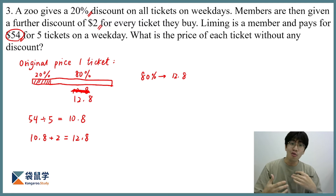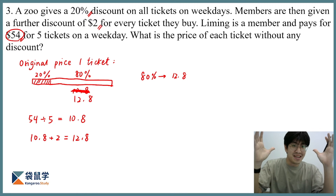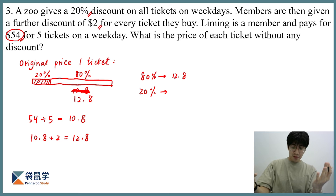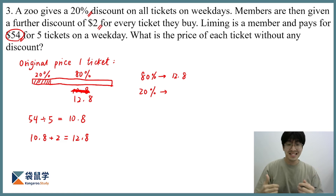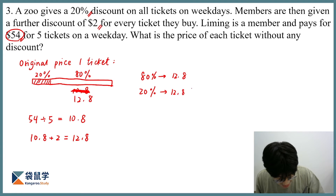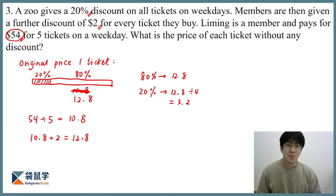Now, how do we work out the original amount, which is 100%? We can first find out what 20% is. Since 80% is 12.8, then 20% is 12.8 divided by 4, which gives us 3.2.